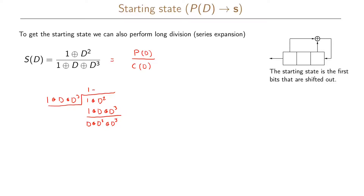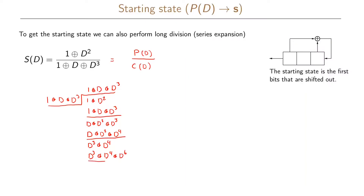Next, d goes into d once, so d times the denominator gives d + d² + d⁴. Summing these two rows we get d³ + d⁴. Then d³ times the denominator gives d³ + d⁴ + d⁶, and we get d⁶ as the remainder. We can continue this process indefinitely.